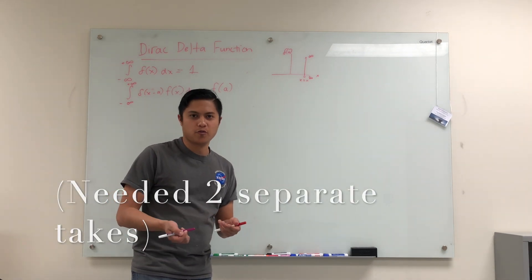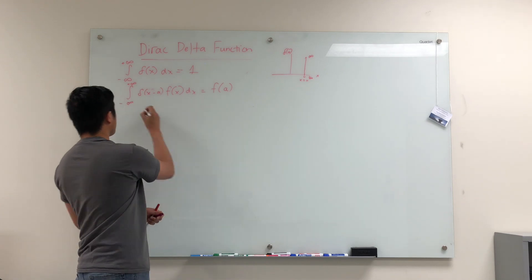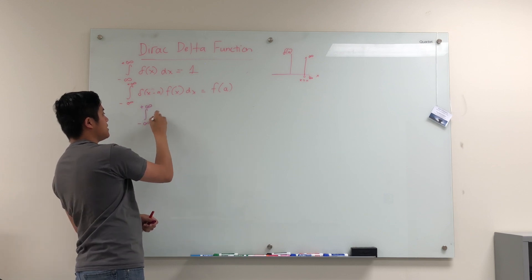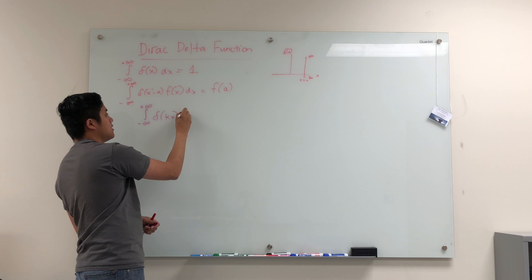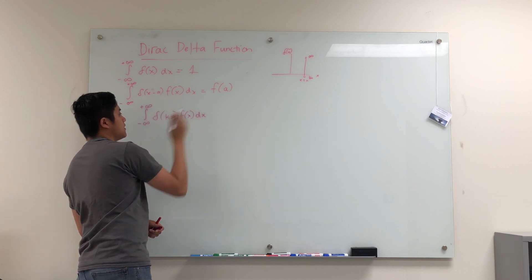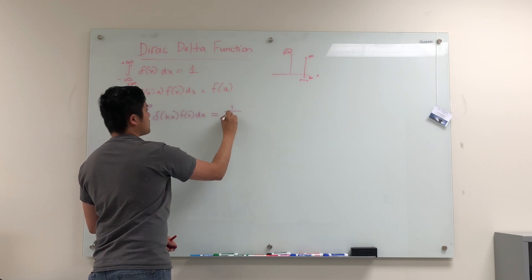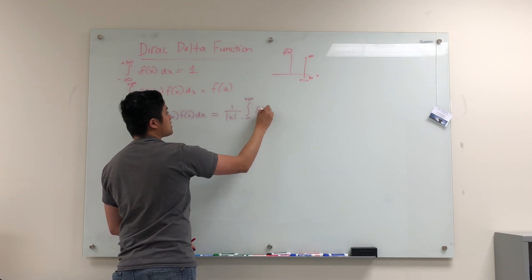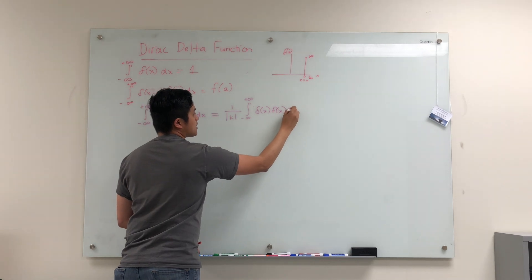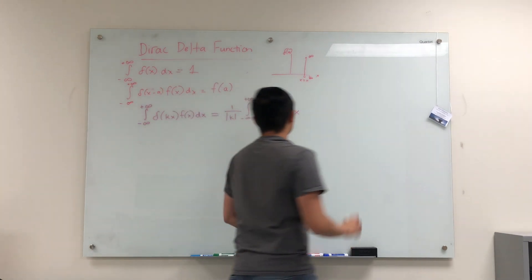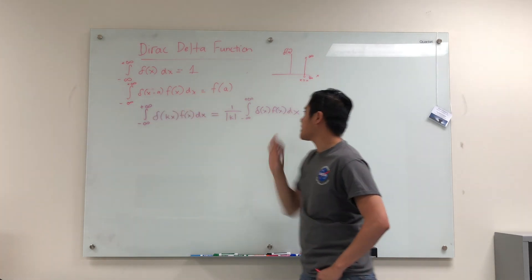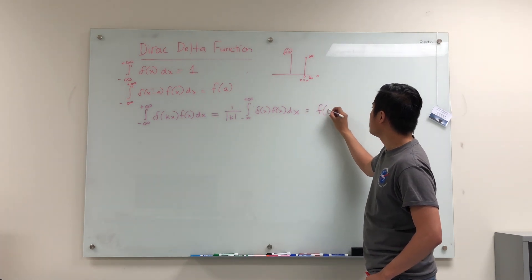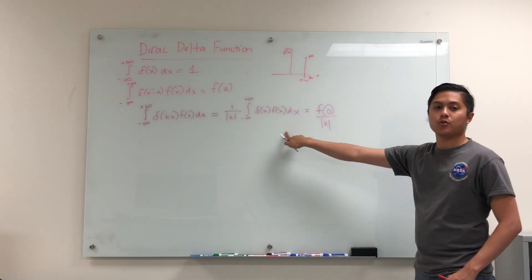Now we're going to get to the topic of the video and prove a certain property of the delta function. Namely, we're going to have the property: integrated from negative infinity to positive infinity, we have delta of some constant k times x multiplying f of x dx. This is just the same as 1 over the absolute value of k, integrated from negative infinity to positive infinity, delta x, f of x dx. And furthermore, since a is equal to 0, this is just f of 0 divided by the absolute value of k. So we're going to prove this today.